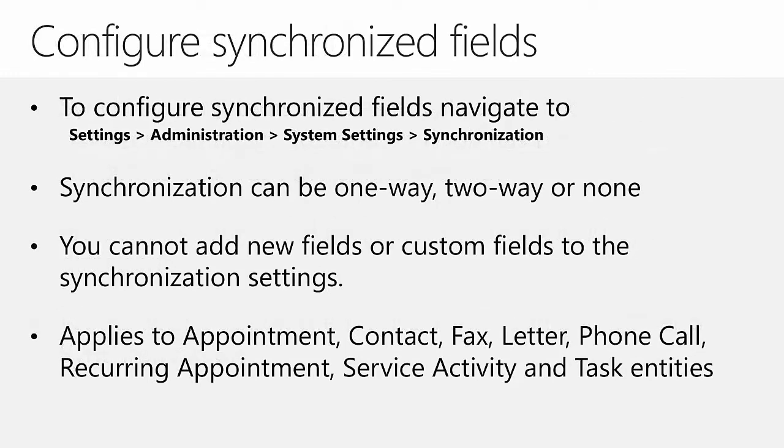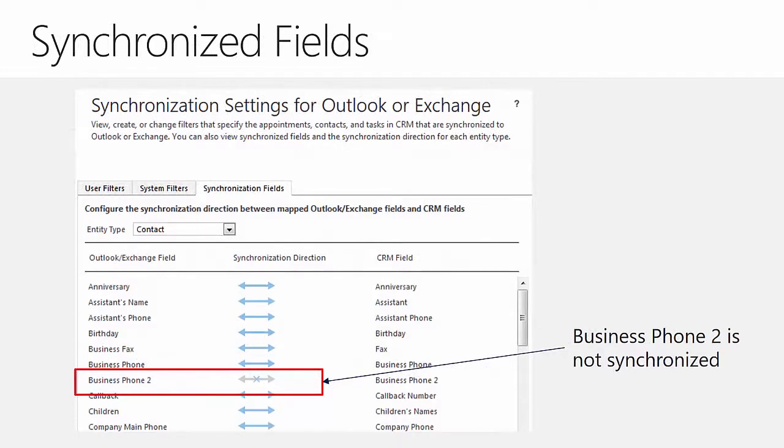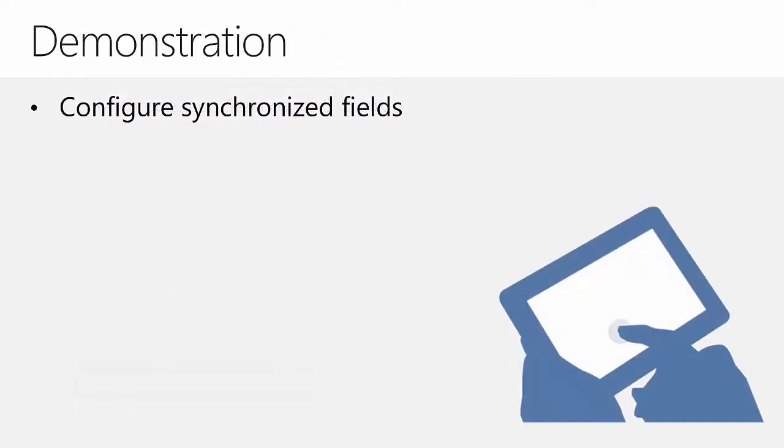For a system administrator to configure synchronized fields, they can navigate to the synchronization tab within system settings of the Dynamics 365 instance. Synchronization can be configured one way, two ways, or completely disabled. One question that comes up often is whether custom fields can be added to the list of synchronized fields, and the answer is not at the moment. Synchronized fields are available not only for contacts but also for appointments and tasks. Email attachments are not synchronized by default but can be enabled on the same synchronization tab within system settings. As shown in the screenshot, Business Phone 2 synchronization has been disabled by a system administrator.